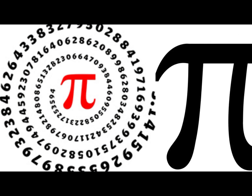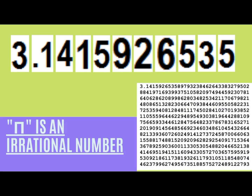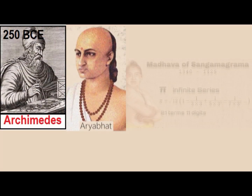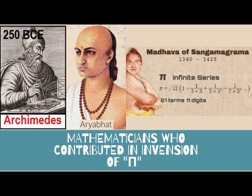If you will write Pi value till infinite numbers, some of the few first numbers would go like this. The value of Pi was first accurately calculated by Greek Mathematician Archimedes around 250 BCE. Also, Indian Mathematician Aryabhatta made a 5-digit approximation, and Chinese Mathematics approximated Pi up to 7 digits around the 5th century CE.